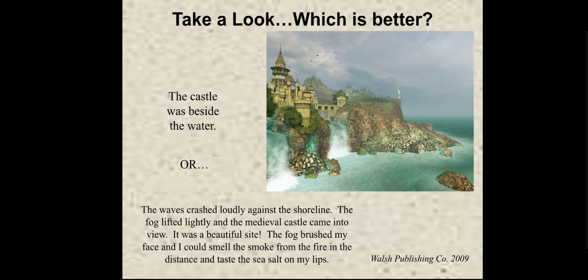Now let's take a look at how setting can create an image in your mind. On the right side we have a picture, and on the left we have the description. 'The castle was beside the water.' When somebody reads this, an image comes into their mind — there is a castle, but what kind of castle? We don't know. And where is it located? Just next to a water body — it can be ocean, it can be sea.